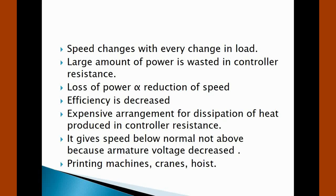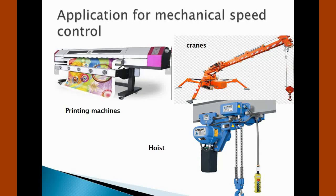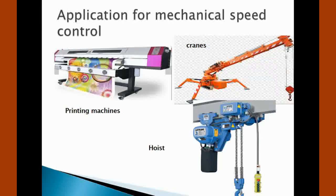This method gives speed below the normal, not above it, because armature voltage can be decreased but not increased by the control resistance. This method is therefore employed when low speeds are required for a short period only and occasionally, as in printing machines, cranes and hoists where the motor is continually started and stopped. That is the reason we prefer electrical methods to increase efficiency. I hope this lecture has been helpful.